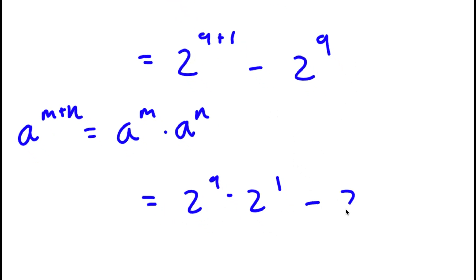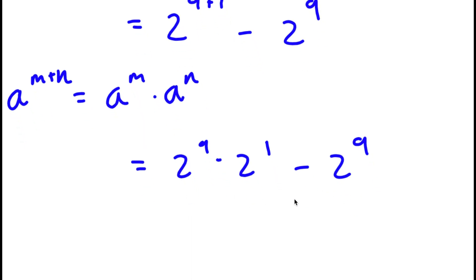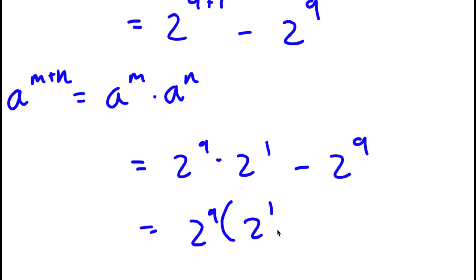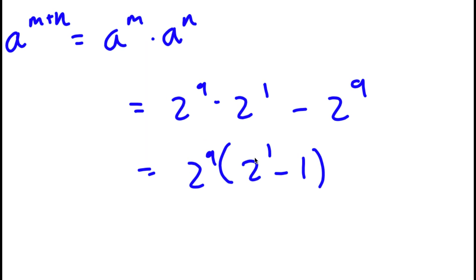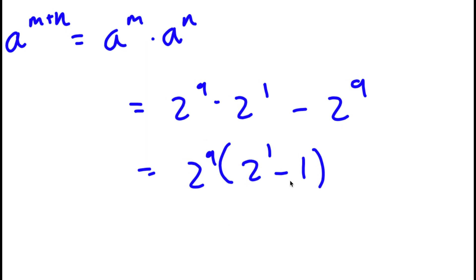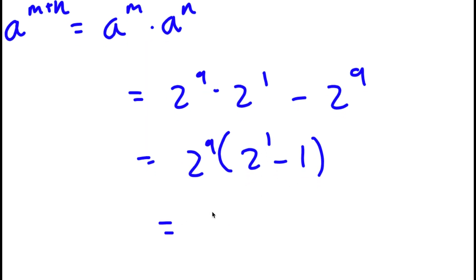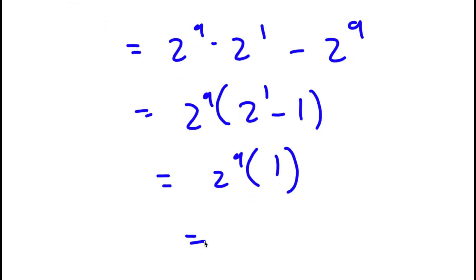Now I have this minus 2 to the power of 9. If I factor out 2 to the power of 9, I get 2 to the power of 9 times 2 to the power of 1 minus 1. And 2 to the power of 1 minus 1 is simply equal to 1. So now I have 2 to the power of 9 times 1, which is equal to 2 to the power of 9.